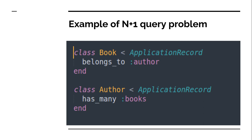Let's understand the N+1 query problem with an example. Consider you have two models: Book and Author. Every author has many books, and every book belongs to an author — a one-to-many relationship between Author and Book. One author has many books, and every book has one author.